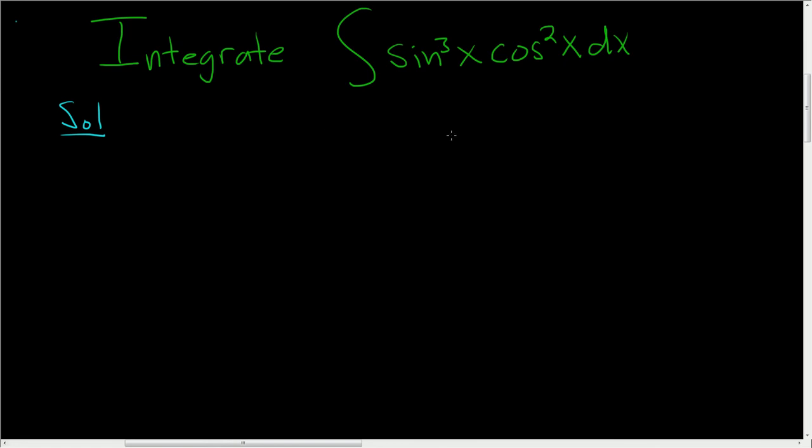In a problem like this, whenever you have powers of sine and powers of cosine, you want to look and see if there's an odd power.